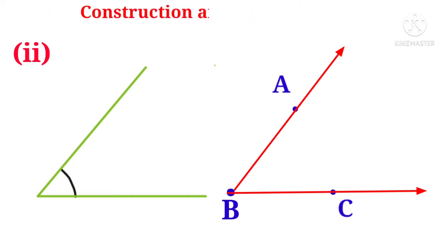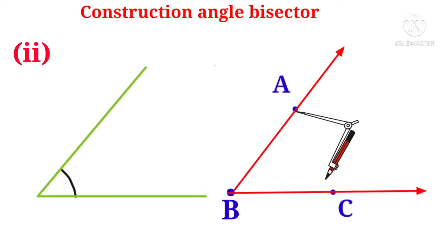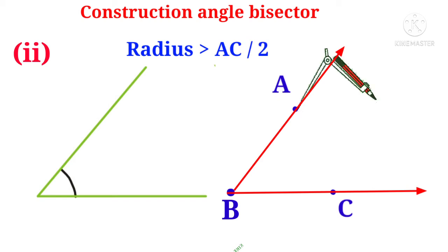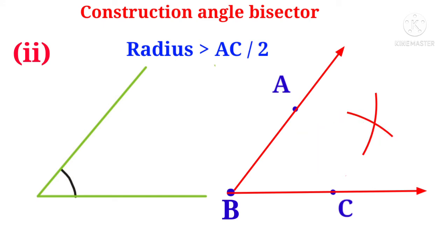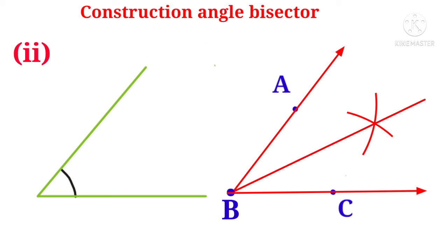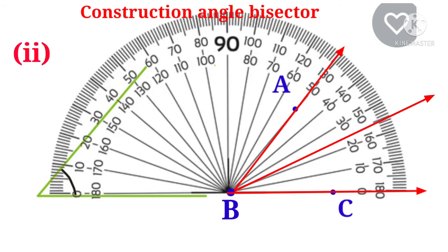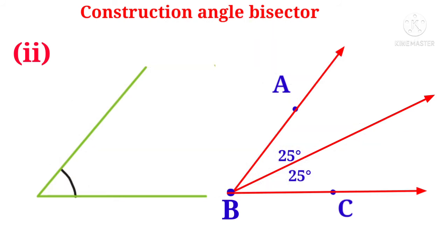Let us construct the angular bisector for angle ABC. Take the compass, put the sharp end at A and take more than half the length of AC as radius. With center A, draw an arc. With center C and the same radius, draw another arc cutting the previous arc. Connect the intersection of the arcs with point B using a ray — this is the angular bisector. The protractor shows 25 degrees, so the total 50 degrees is divided into two equal angles of 25 degrees and 25 degrees.